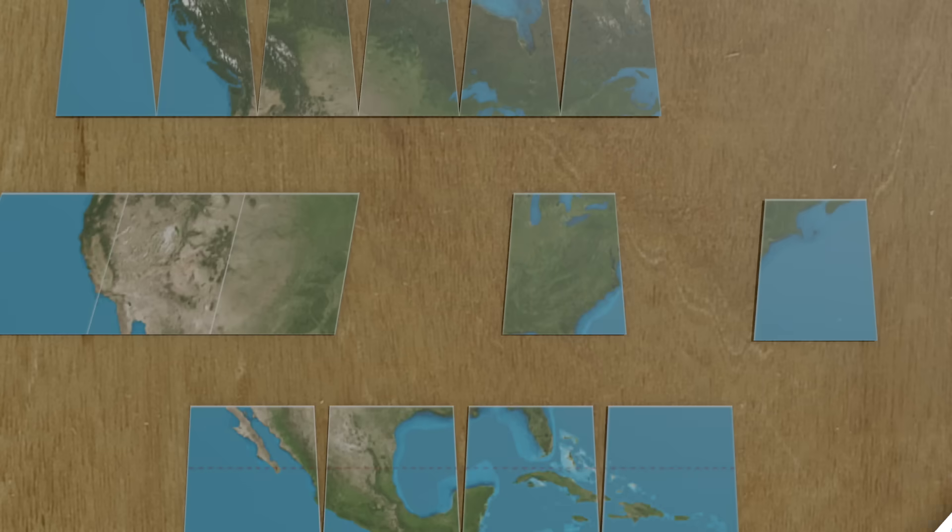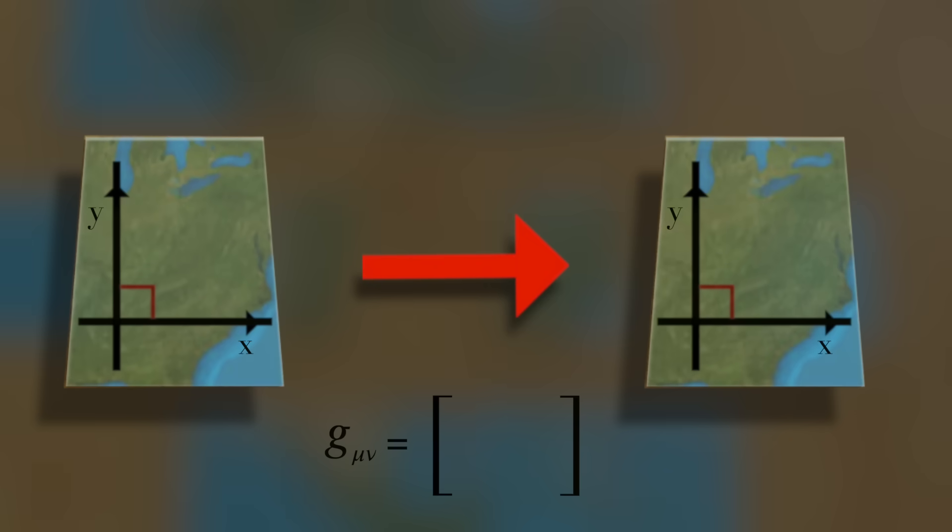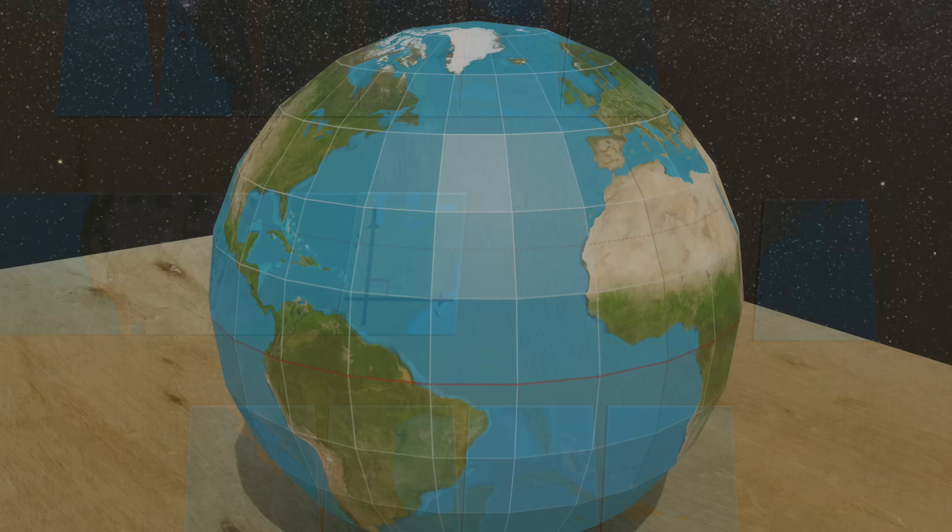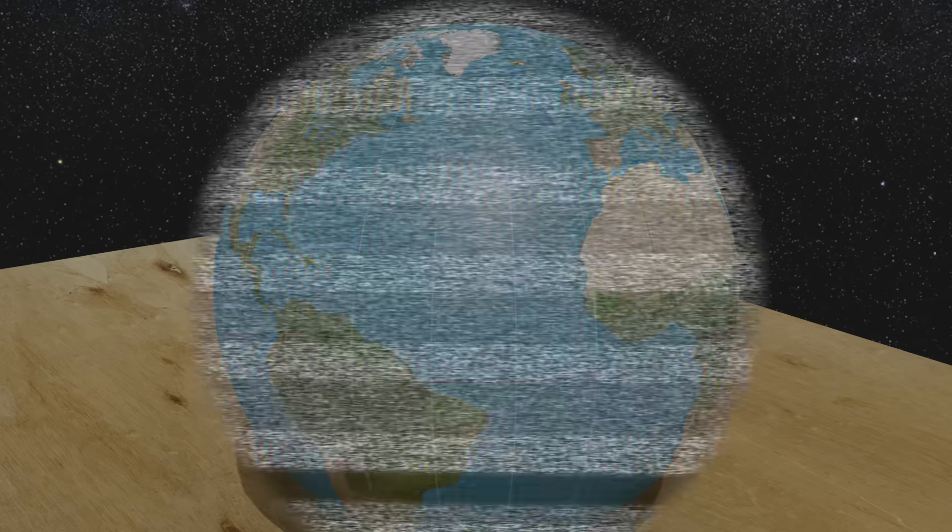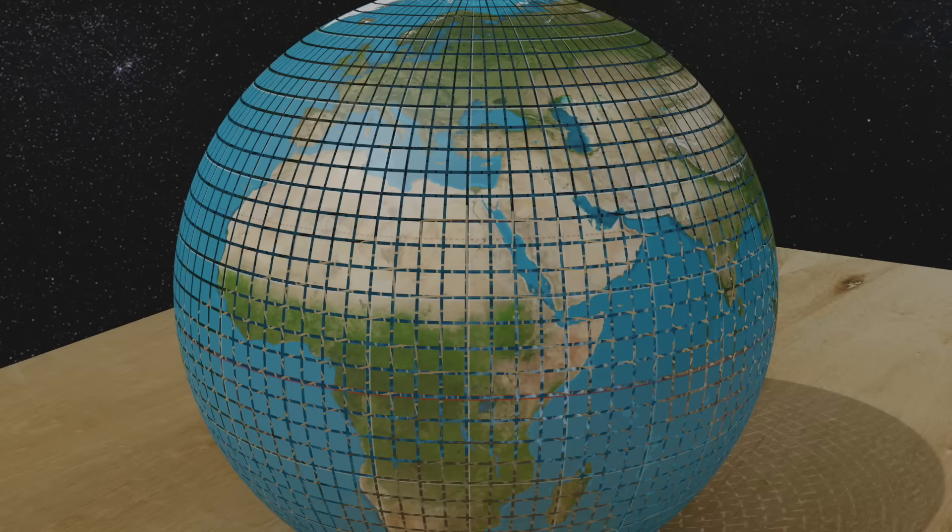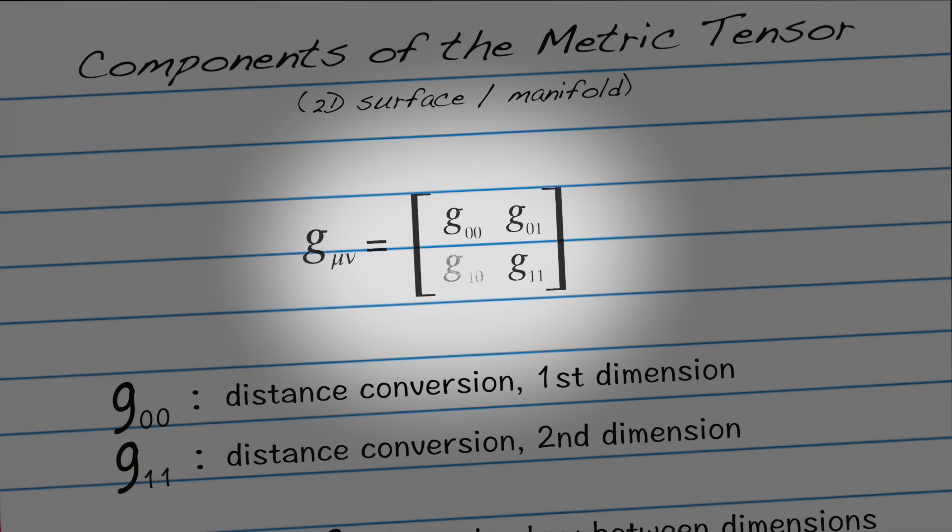So for each tiny region of our map, we need one number or bar scale to tell us how much our x-axis has been stretched or shrunk, one number or bar scale to tell us how much our y-axis has been stretched or shrunk, and one number to tell us how much the angle between the axes has been skewed. The tinier we make these regions, the more accurate our metric will become, and the better we can describe our curved surface.